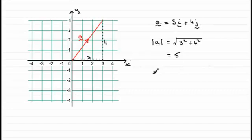And the symbol for a unit vector is just to put a little circumflex over the top of your vector. And so this will be 1 fifth of this vector. In other words, we get 3 fifths i plus 4 fifths j.